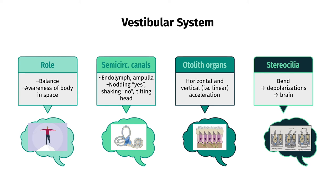The vestibular system is a next-door neighbor to the cochlea in the inner ear, responsible for our balance and awareness of our body in space. There are three semicircular canals containing fluid called endolymph, each situated in a different plane for up-and-down head movement like nodding yes, shaking side-to-side, and tilting the head. All three connect with the ampulla, where, using a similar mechanism as the auditory system, stereocilia bend depending on the head movement, and depolarizations travel to the brain. There are also otolith organs, where stereocilia bend due to the movement of calcium carbonate crystals called otoliths.